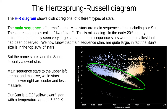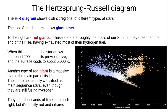Here is the Sun — a G2 yellow dwarf with a temperature of around 5,800 Kelvin. Stars at the top of the diagram are giant stars. This region shows red giants in the top right. Red giants are roughly the mass of our Sun but have reached the end of their life, having exhausted most of their hydrogen fuel. When this happens the star grows to around 200 times its previous size and the surface cools to about 5,000 Kelvin. Another type of red giant in the same part of the HR diagram is a massive star in the main part of its life — these are not usually classified as main sequence stars even though they're still fusing hydrogen, and they emit thousands of times as much light, mostly red and infrared.